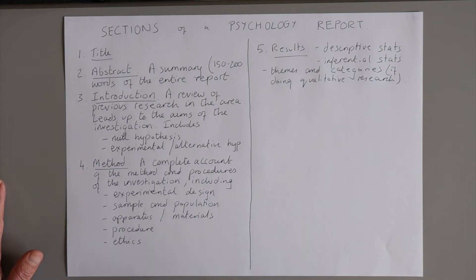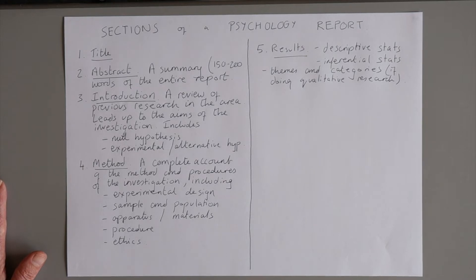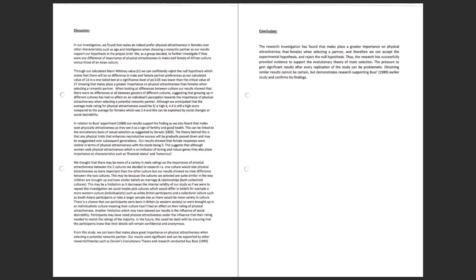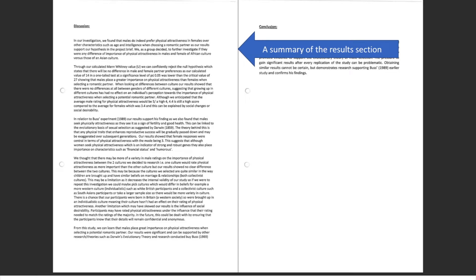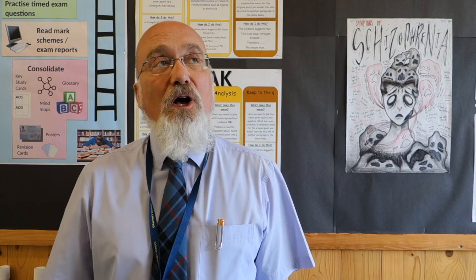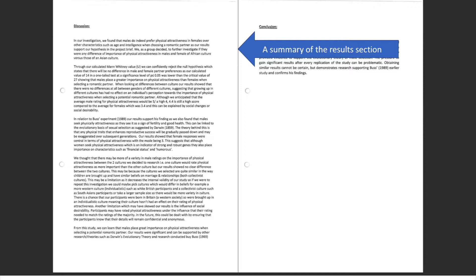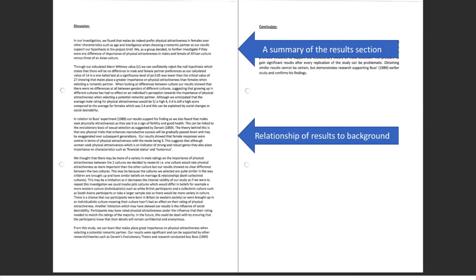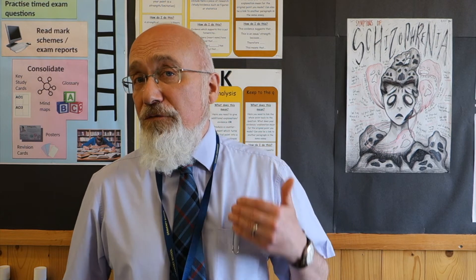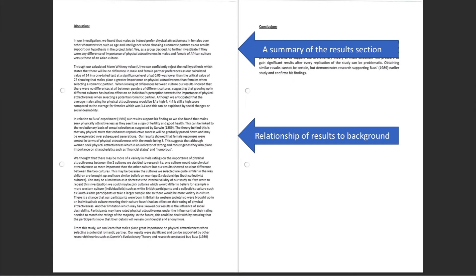The next section is the discussion. First, you want a summary of the results with some interpretation — not repeating the results section, but summarising and explaining what was found. Second, you discuss what relation your results have to the background research mentioned in the introduction, linking back to those earlier studies. Do your results confirm or refute them? In this case, the students' findings supported Buss's earlier findings.